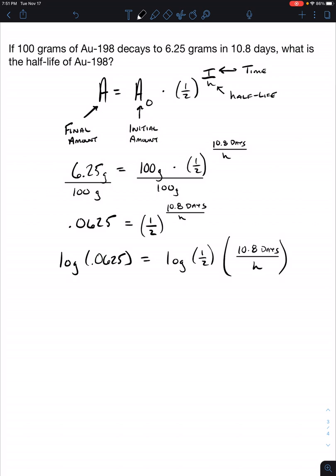So we're going to take the log of 0.0625. Doing that should give you negative 1.2, which is equal to the log of 0.5, or one half, which is negative 0.30. And we're going to multiply that by 10.8 days over H.